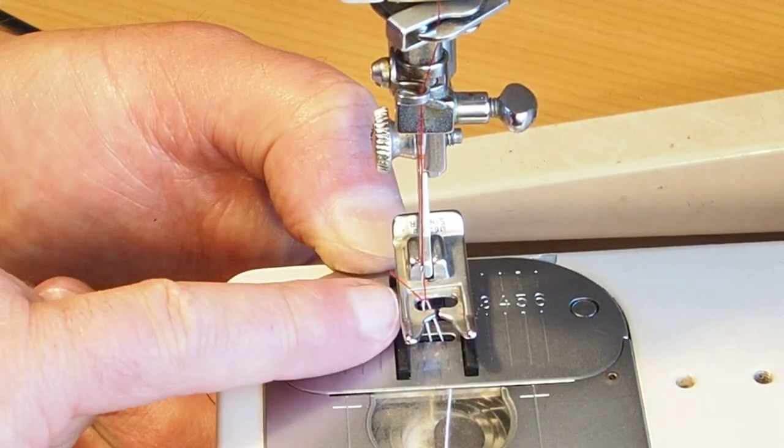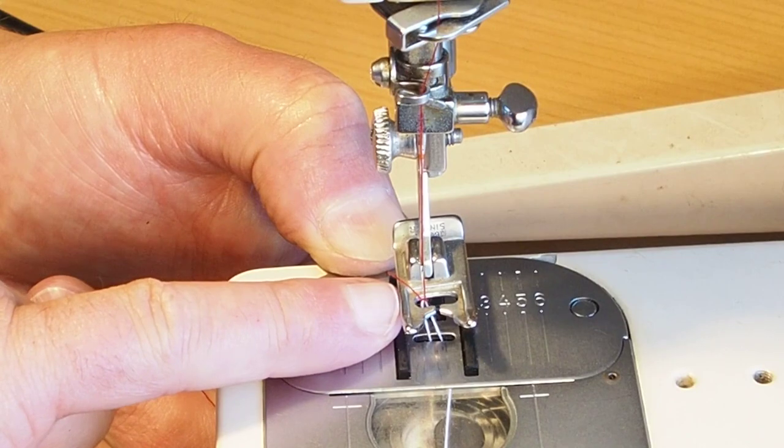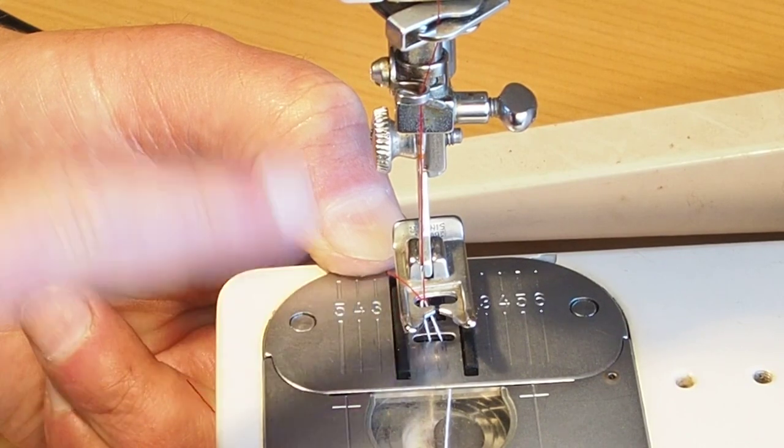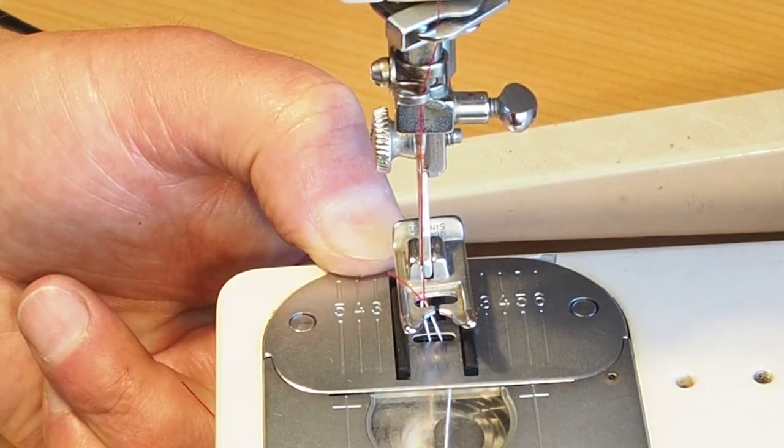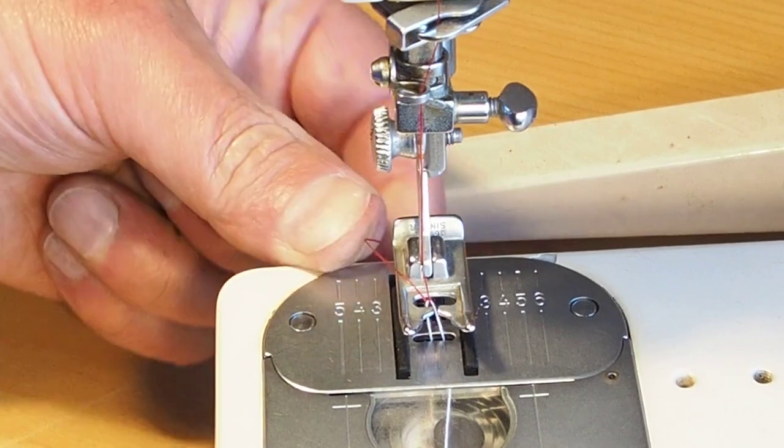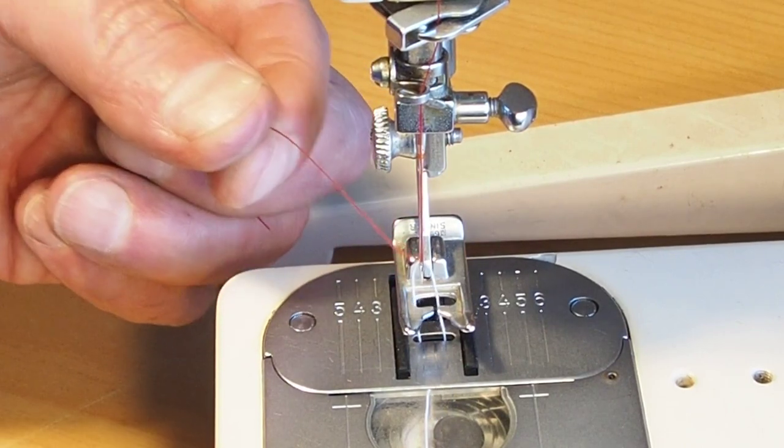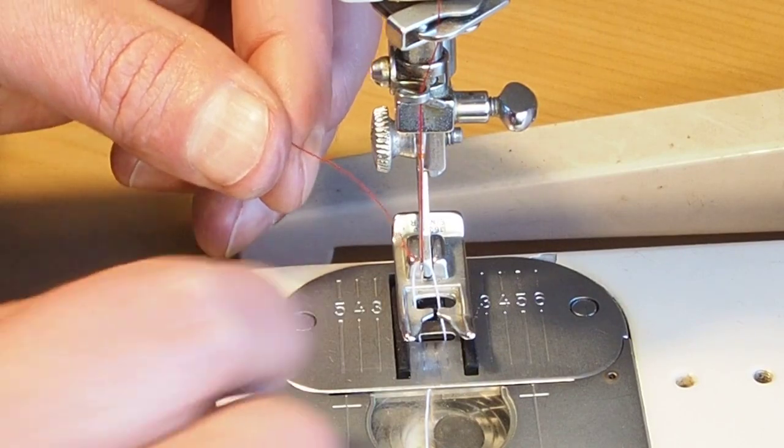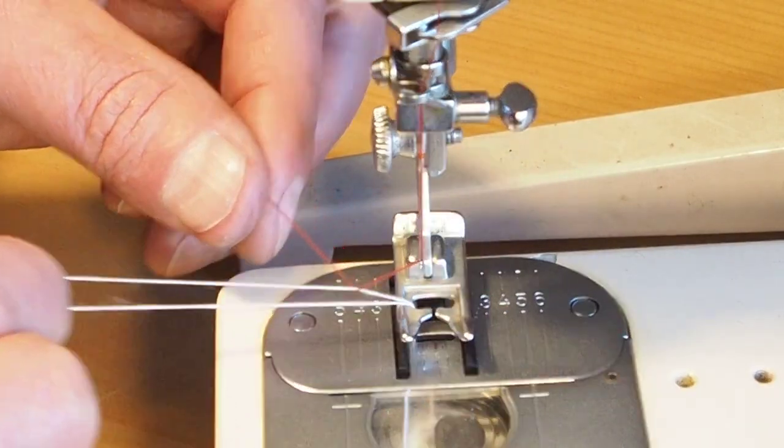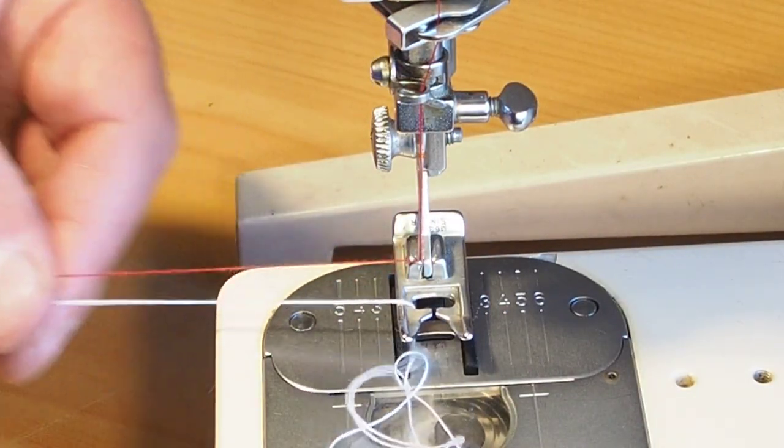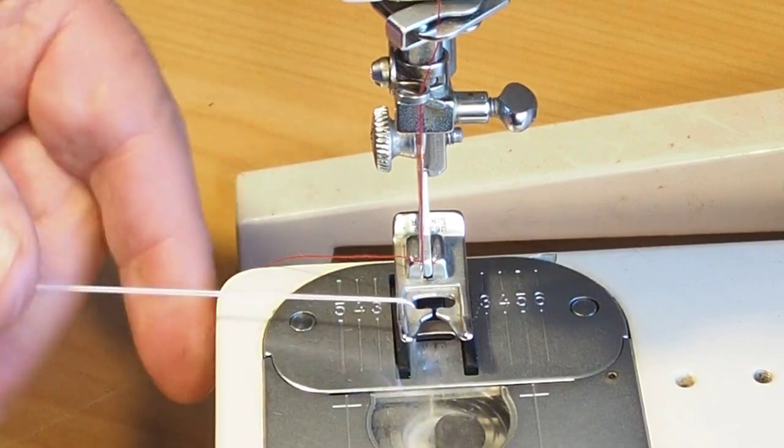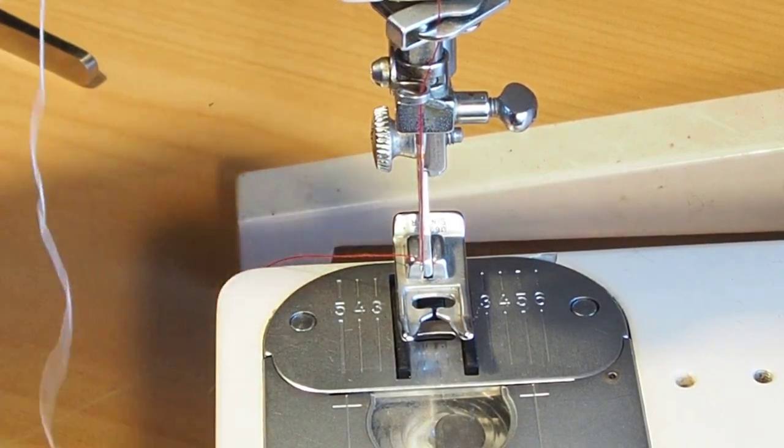Just like that. You'll see that the thread has popped up already. The take-up lever did most of the work there, and then you can pull a little bit more and the thread will come right up. You can just grab the thread like so and pull it through. Just ran out of thread there.